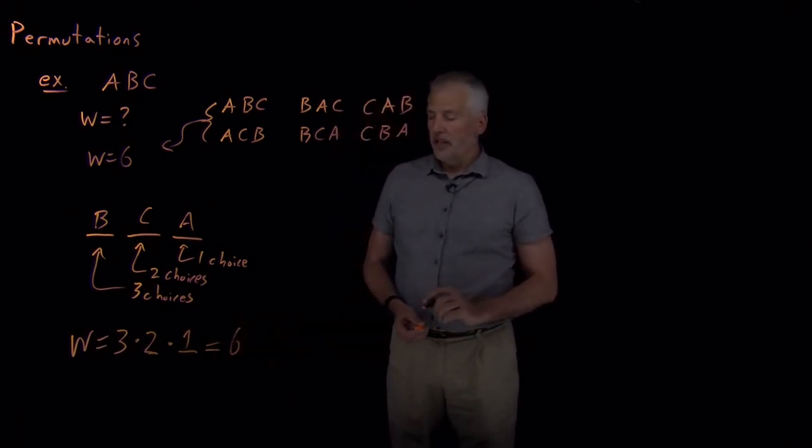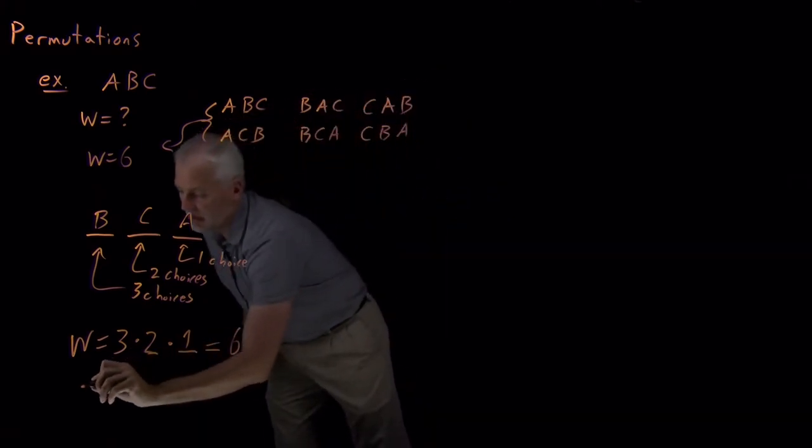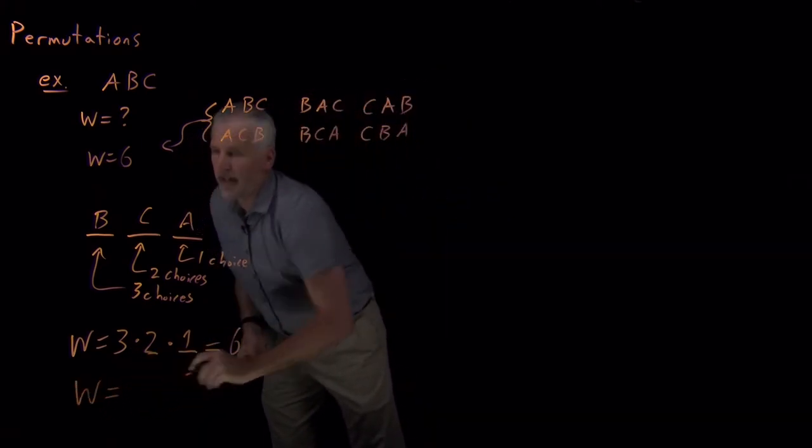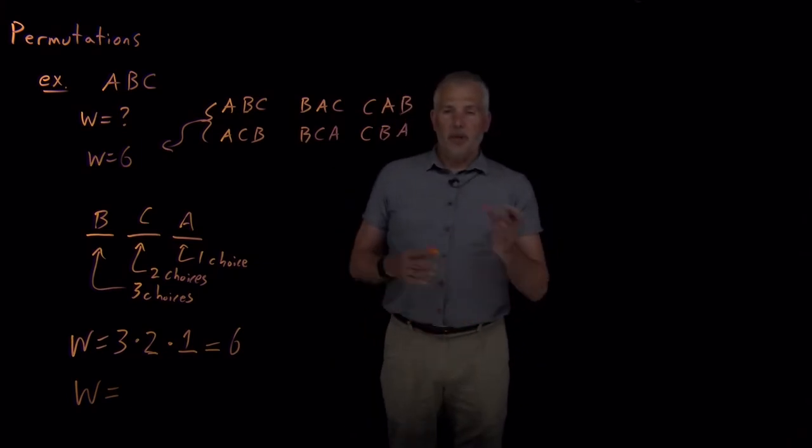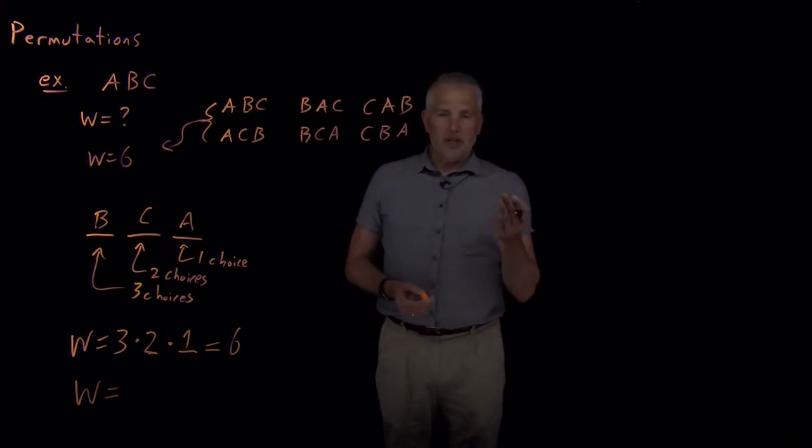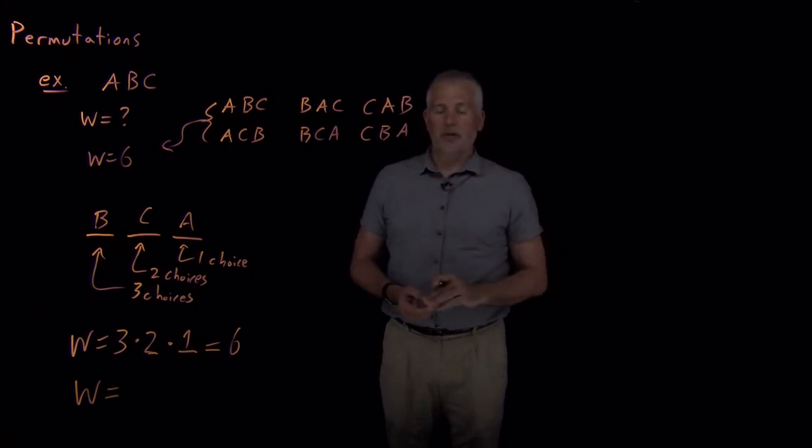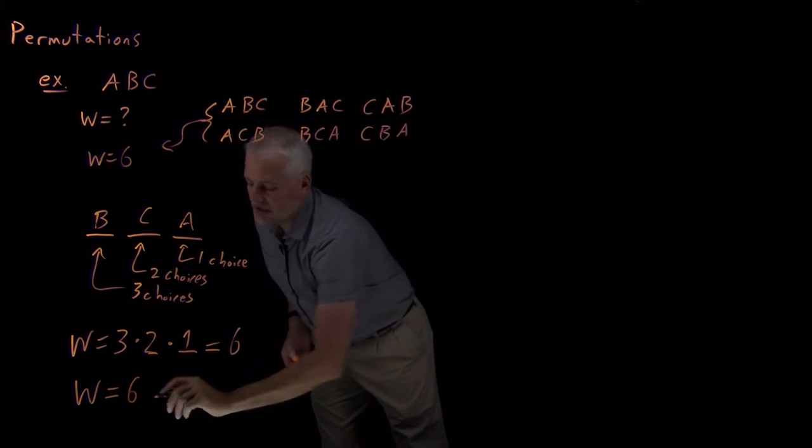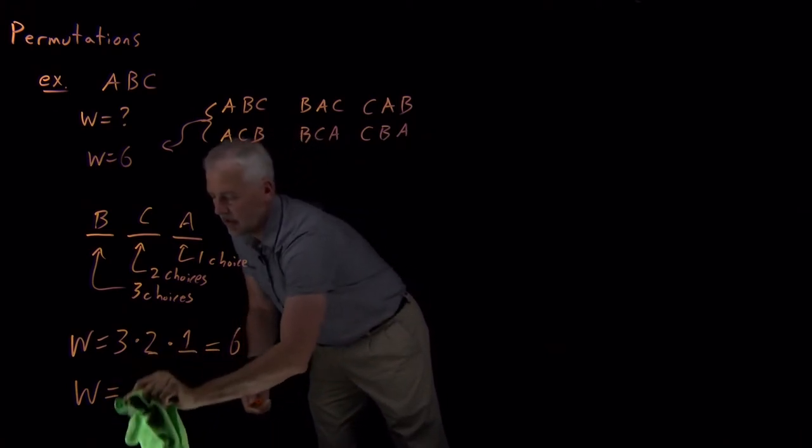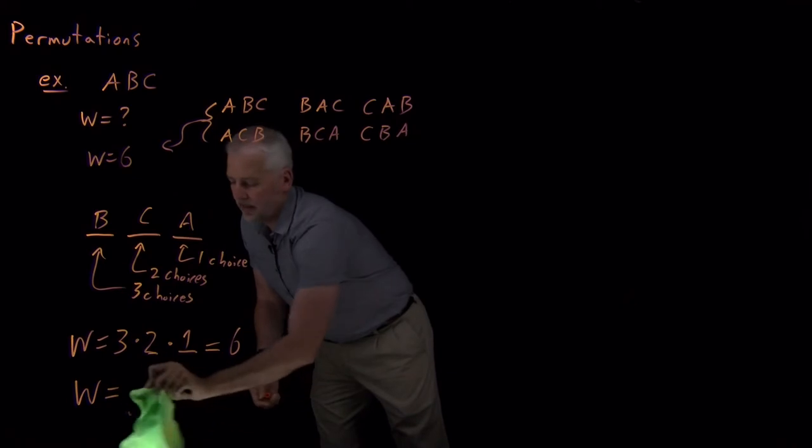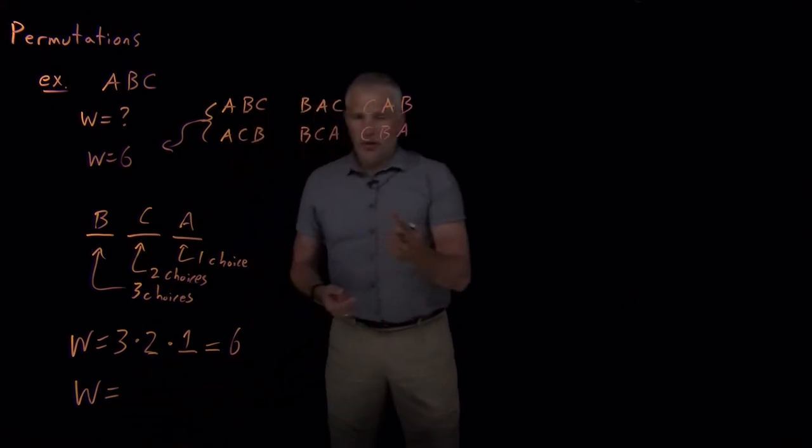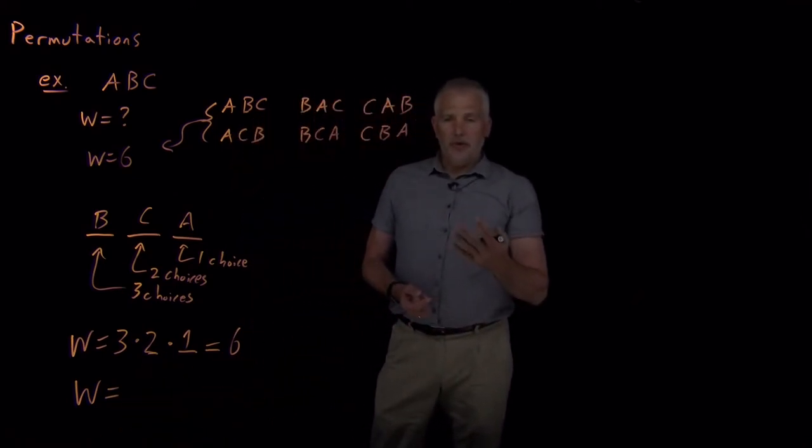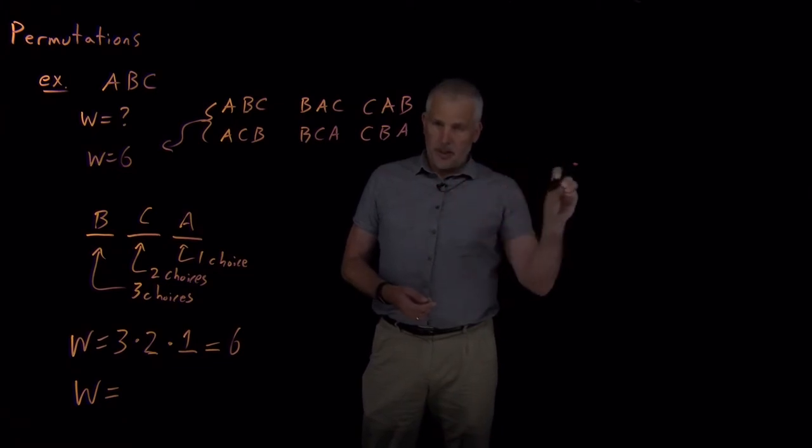More generally, if I have N objects that I want to find the permutations of, and I'm not patient enough to sit down and write out all the possibilities, if I did it with six letters, there'd be six choices for the first letter, then five, four, three, two, one. So I just keep decreasing until I run out of places to put letters.